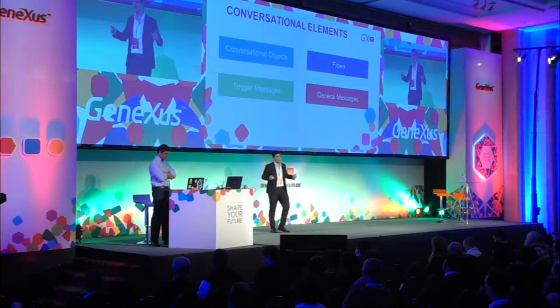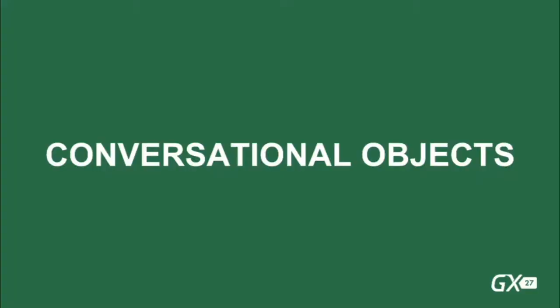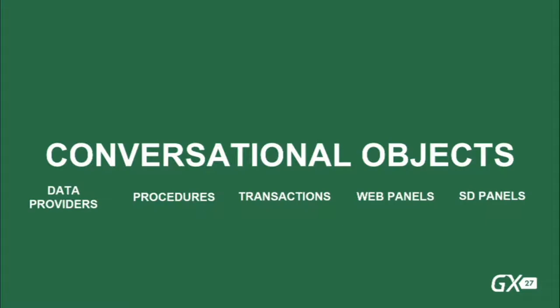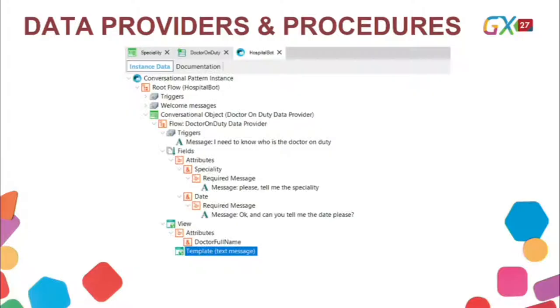The most robust element is going to be the conversational object, because it represents the objects we will work with — these objects already exist in GeneXus. The ones we are currently working with are: data providers, procedures, transactions, web panels, and SD panels. What we need to understand is how the pattern behaves when we integrate or cross-reference one of these objects. Let's start with examples of data providers and procedures — for our pattern, the behavior will be similar.